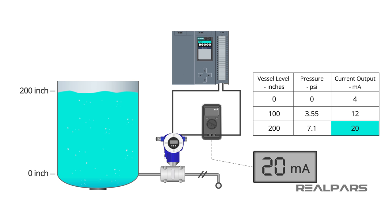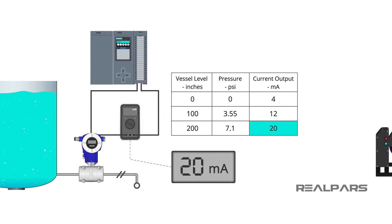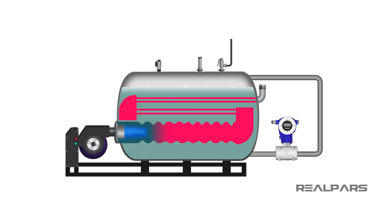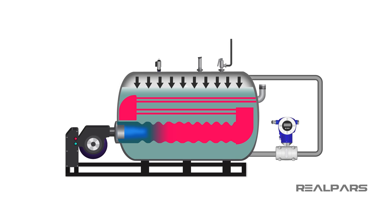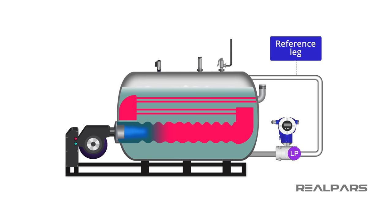So far, we have only considered open vessels. Let's move on to the level measurement of closed vessels. The major difference between open and closed vessel level measurement is the fact that we need to consider the pressure in the vapor above the liquid in the closed vessel. This vapor pressure exerts a force on the surface of the liquid. We can compensate for the vapor pressure by connecting the low pressure side of the differential pressure transmitter to the top of the vessel through a pipe referred to as a reference leg.